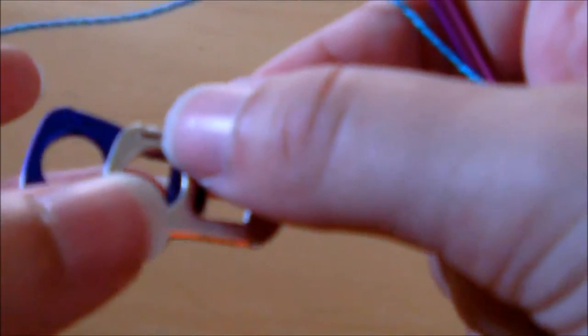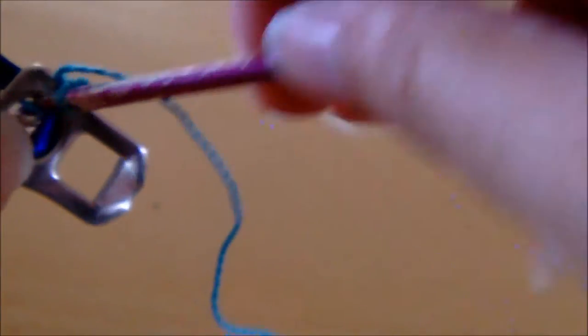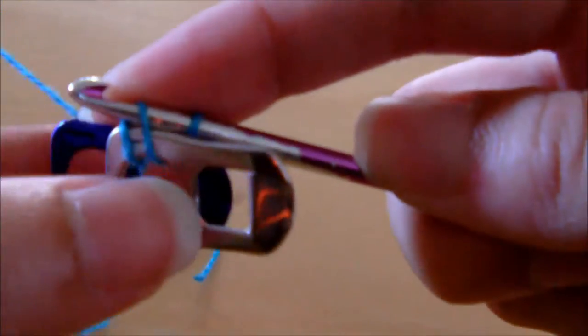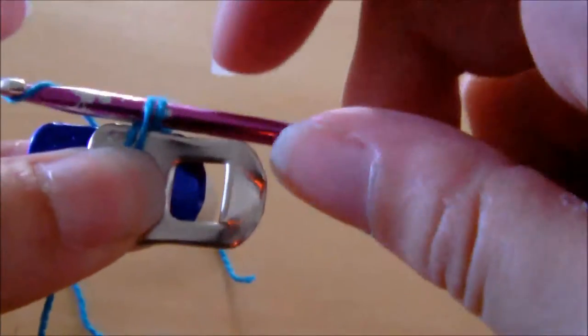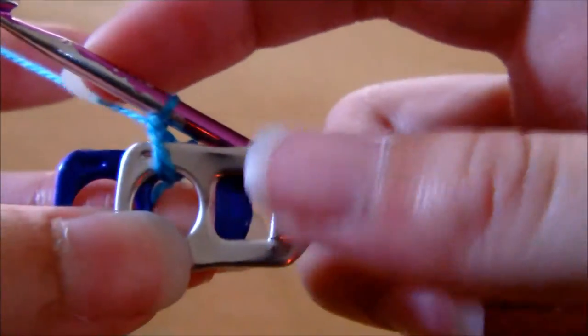Okay, so you grab two pop tabs, one on top of the other. Then you just put the crochet hook through the hole, grab the yarn and pull it up to the top of the pop tabs, or to the side of the pop tabs. Then you grab the yarn again and pull it through the hoop.